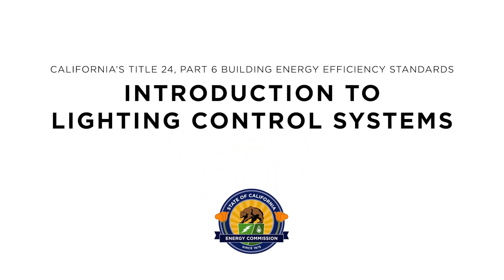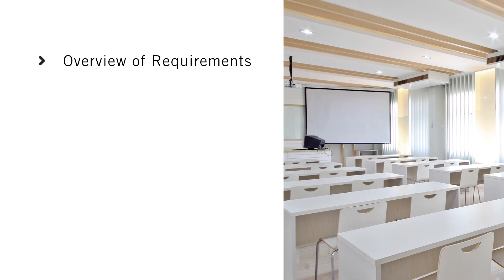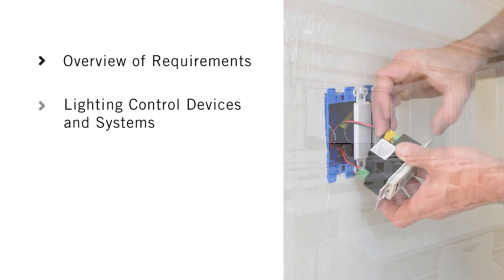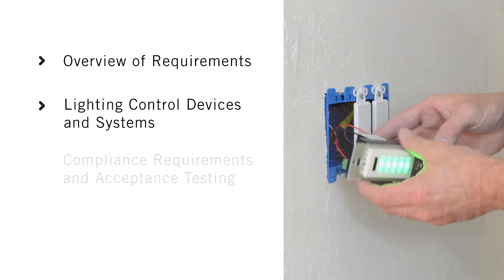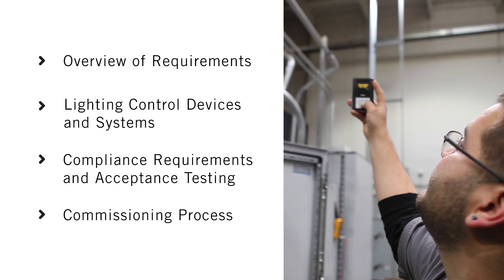Welcome to the Non-Residential Lighting Controls Overview video, where we'll tell you about requirements in California's Building Energy Efficiency Standards, also known as the Energy Code. We'll cover lighting technologies, applications, requirements, and compliance documentation. Specifically, we'll provide an overview of requirements pertaining to the Energy Code, lighting control devices and systems, compliance requirements and acceptance testing, and the commissioning process.